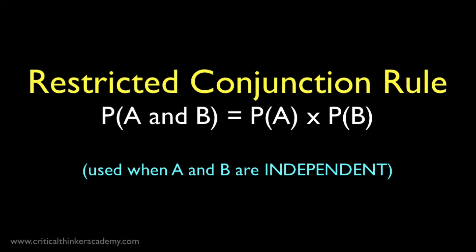In this video we'll look at the conjunction rule, the rule for calculating the probability of a conjunction of events. But we'll deal with a special case where the events in question are independent, and the rule takes on a very simple form.